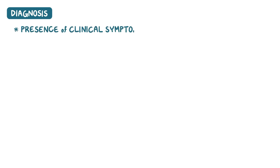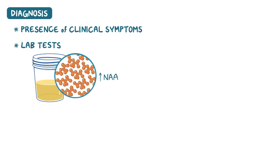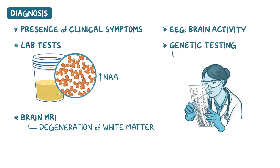Diagnosis of Canavan disease is suspected based on the presence of clinical symptoms and lab tests showing elevated levels of NAA in the urine. Additional tests may include a brain MRI that can help visualize degeneration of the white matter, as well as an electroencephalogram, or EEG, which monitors the brain's activity. Finally, genetic testing showing mutations on the ASPA gene can confirm the diagnosis.